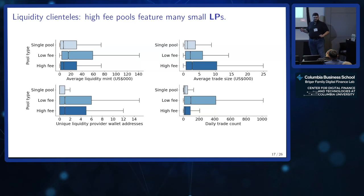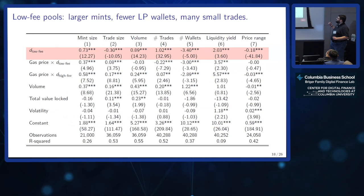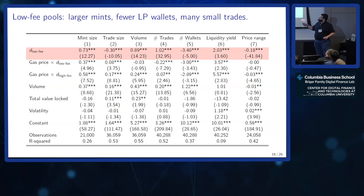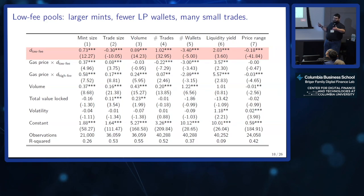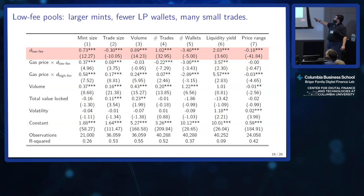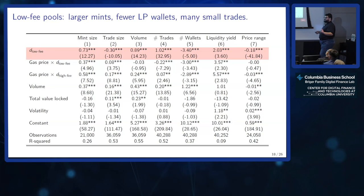With five minutes left, let's go quicker through the data. This is basically the regression analysis. The low-fee pool has 73% higher mints in logs, lower trade sizes, and generally trades about twice as much. We compute liquidity yield simply as fee revenue divided by TVL.